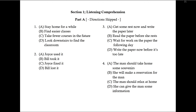Part A. Directions. In Part A, you will hear short conversations between two people. After each conversation, you will hear a question about the conversation. The conversations and questions will not be repeated. After you hear a question, read the four possible answers in your test book and choose the best answer. Then, on your answer sheet, find the number of the question and fill in the space that corresponds to the letter of the answer you have chosen.